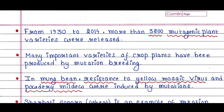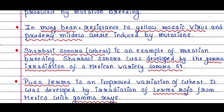From 1930 to 2014, more than 3200 mutagenic plant varieties were released. Many important varieties of crop plants have been produced by mutation breeding. Now we will talk about some examples.